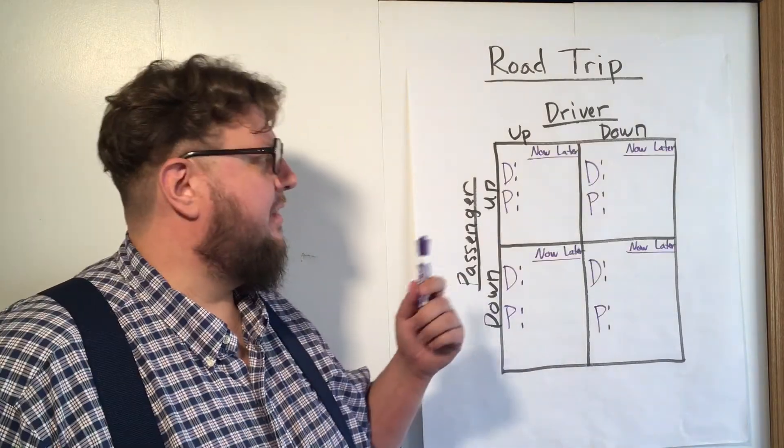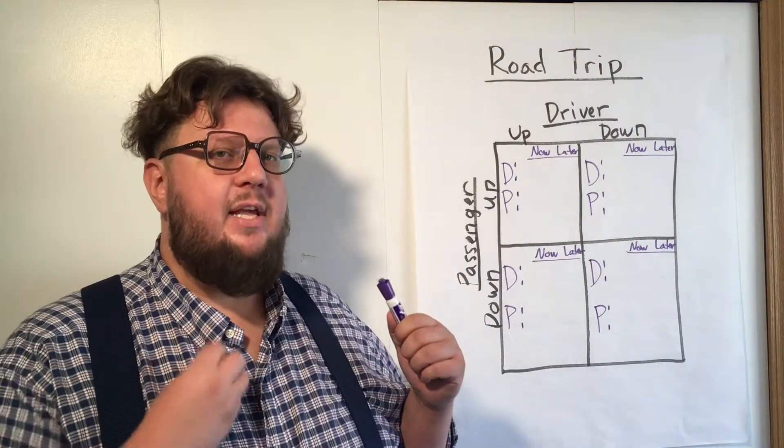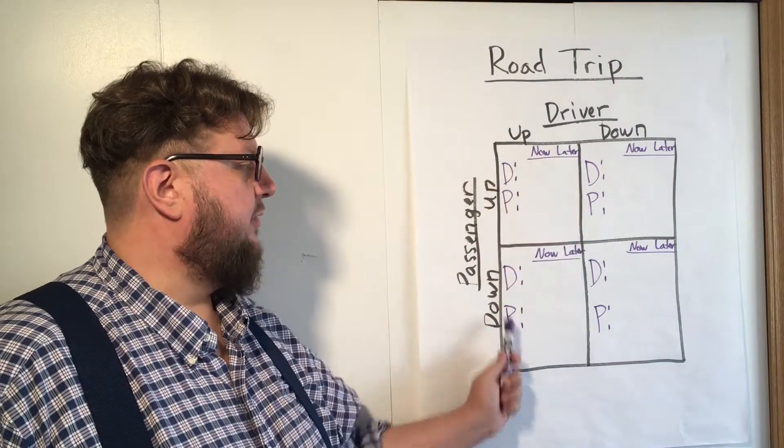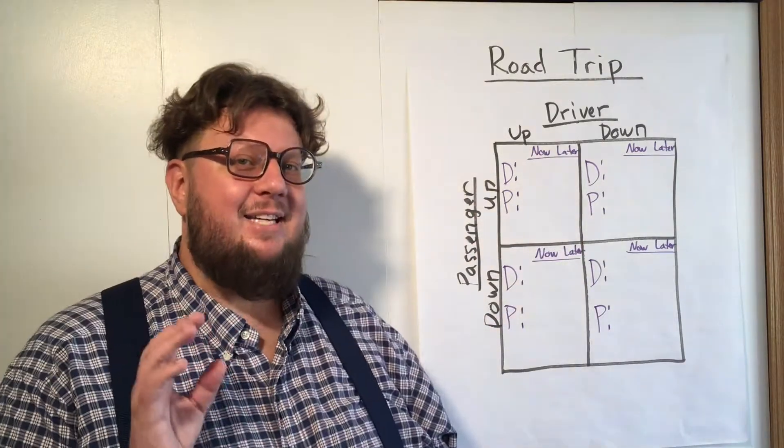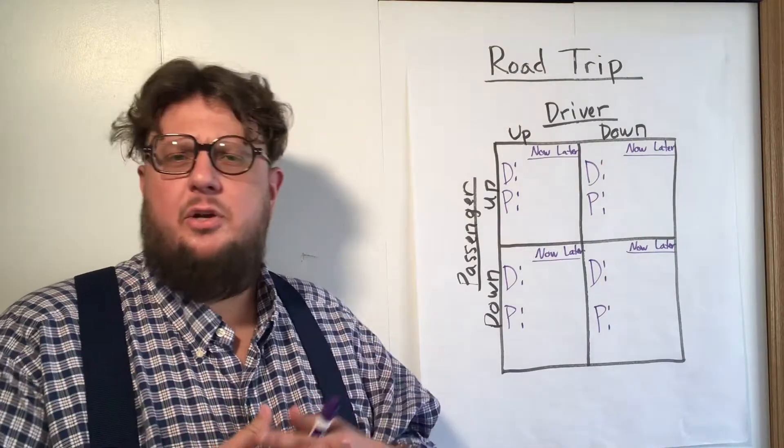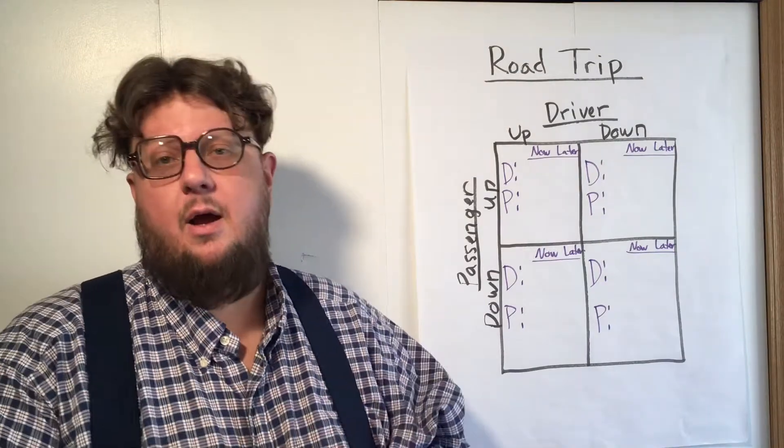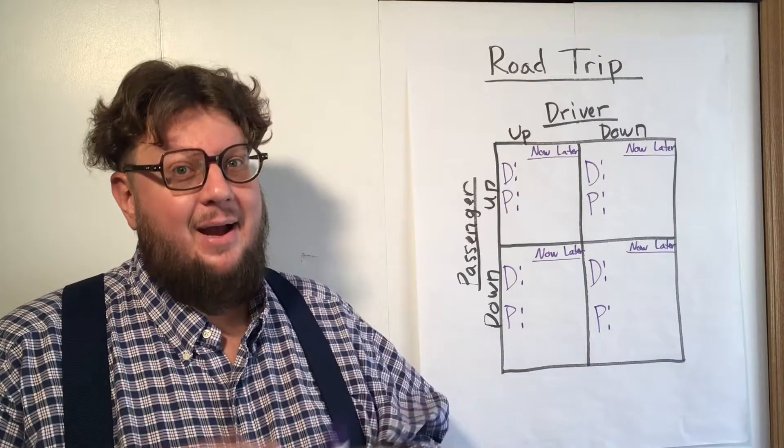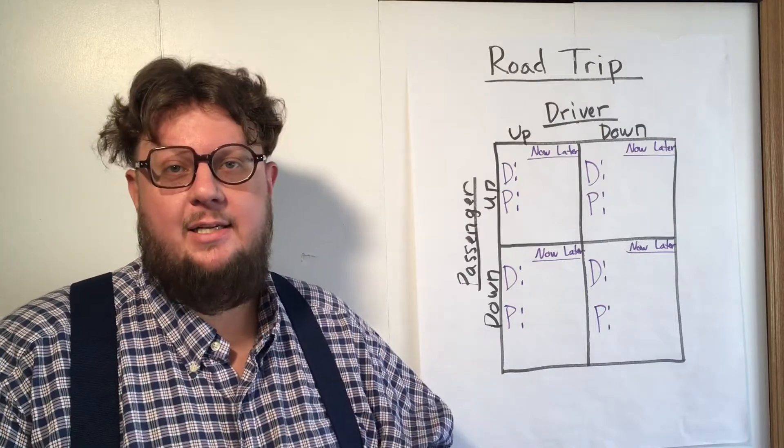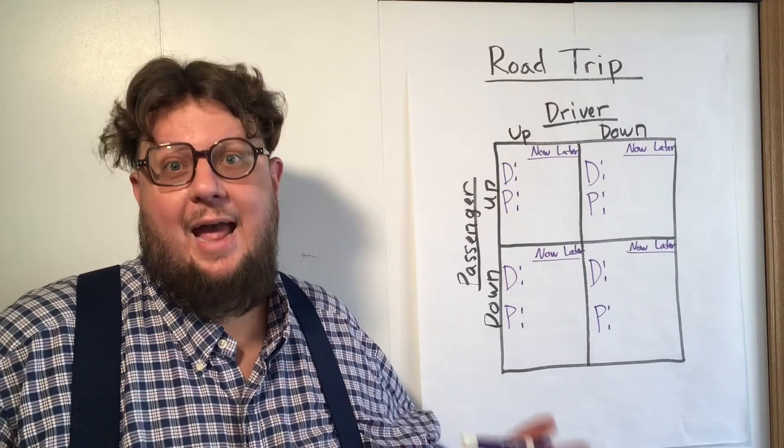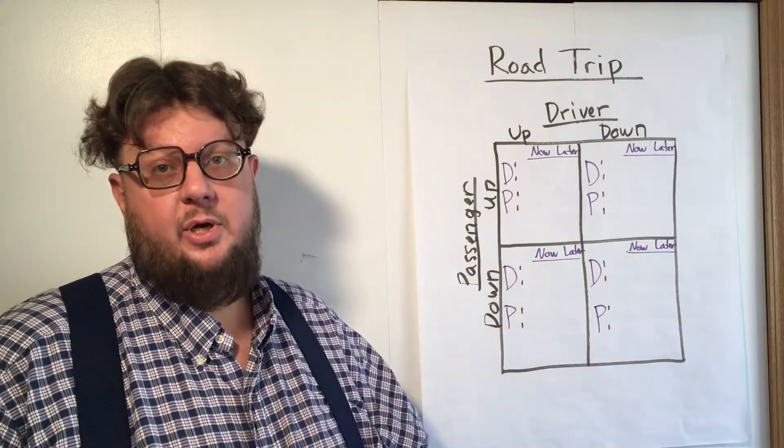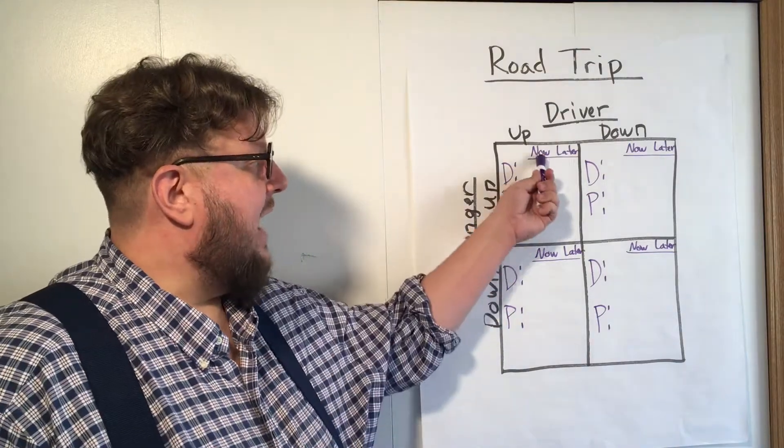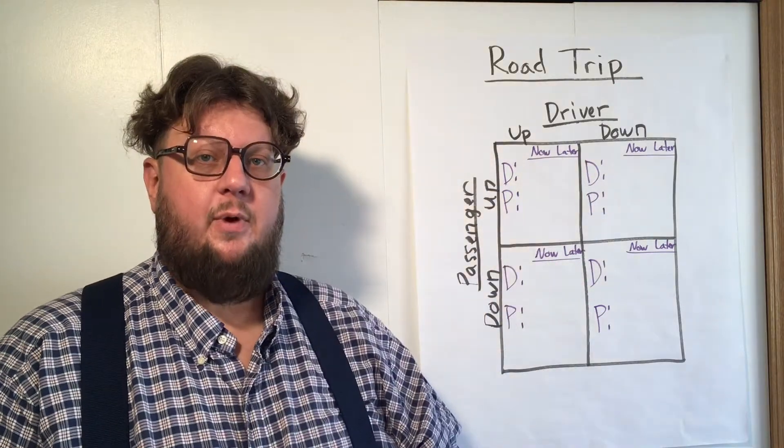And here we've added the player actions and the results they get from those actions. I have driver and passenger for all four of those squares. I've also added a time element and that's not traditionally taught when you're introducing the concept of Nash equilibrium, but in my microeconomics classes I require it for almost every one so I'm adding it in now. And it brings our story, the one about the road trip, to full fruition as we go through this. So we have a now result and a later result for all four of these possible squares.